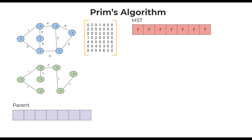We go to the 0th row of the adjacency matrix — it tells us all the connections from 0: three edges with weights 2, 1, and 4. We pick the minimum value, which is 1, corresponding to the third vertex. We include vertex 3 in our spanning tree, mark it as true, and the parent of 3 is 0. Now we have two vertices in our spanning tree. We loop through both rows and pick the minimum value, but ensure we don't re-pick vertices already added.